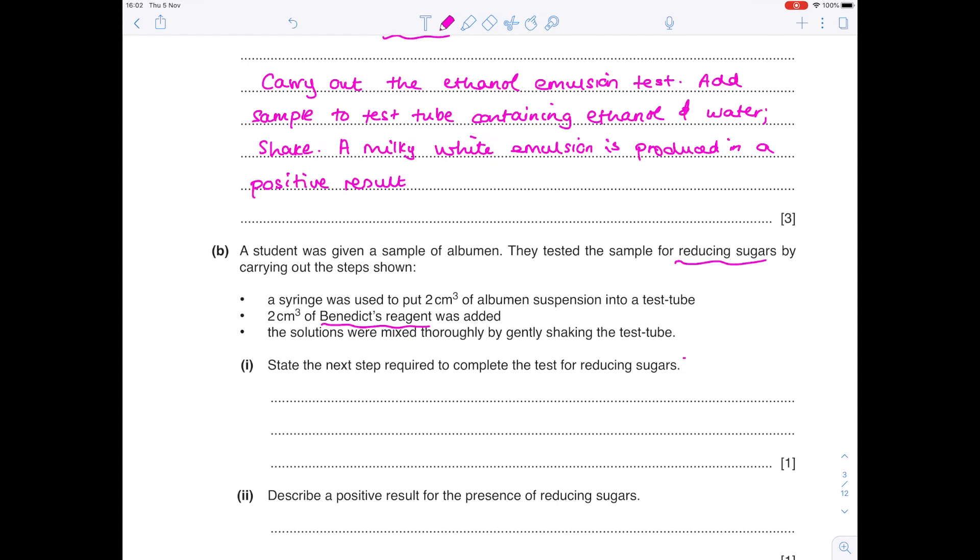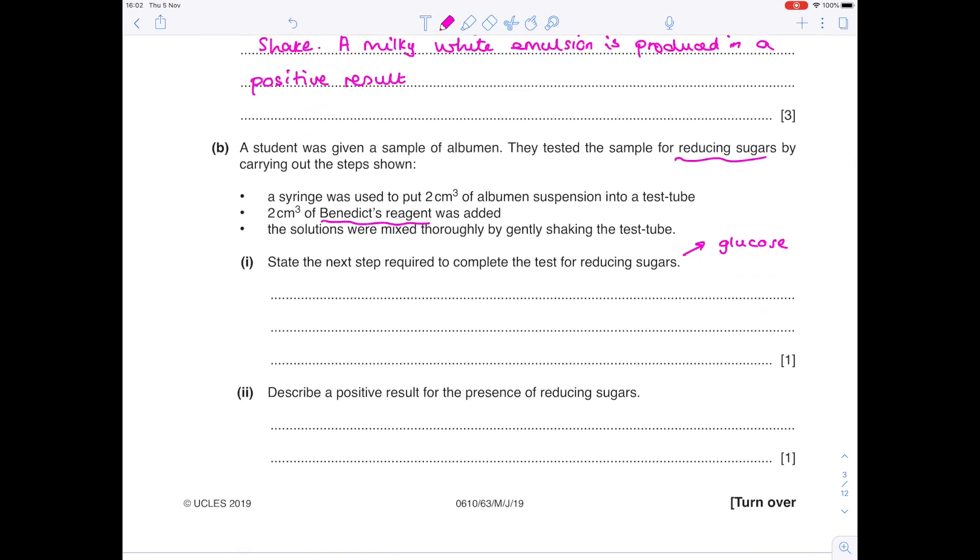State the next step required to complete the test for reducing sugars, which remember include things like glucose. You must learn the test for glucose, which is that you add Benedict's reagent to it, and then you heat it in a water bath. And so that's going to be your next step. Heat solutions in a water bath. To describe a positive result for the presence of reducing sugars, you'll see a brick red precipitate.